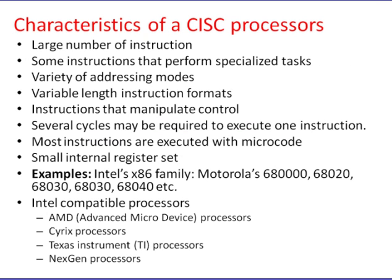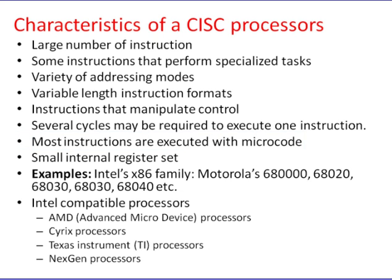Characteristics of CISC processor. Complex instruction set computers have too many instructions and addressing modes, more than a hundred. Variable length instructions range from one byte to several bytes. For example, in the 8386, instruction length varies from one byte to 17 bytes. Most instructions are executed with microcode, which typically resides in special high-speed memory and translates machine instructions into sequences of detailed circuit-level operations.